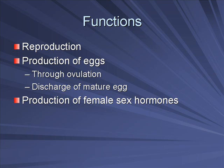Specific to the female is also the production of eggs. Eggs are released through a process called ovulation about every 28 days, and typically it alternates sides — one from the right ovary and the left ovary, continuing back and forth like that. Also, the production of female sex hormones.